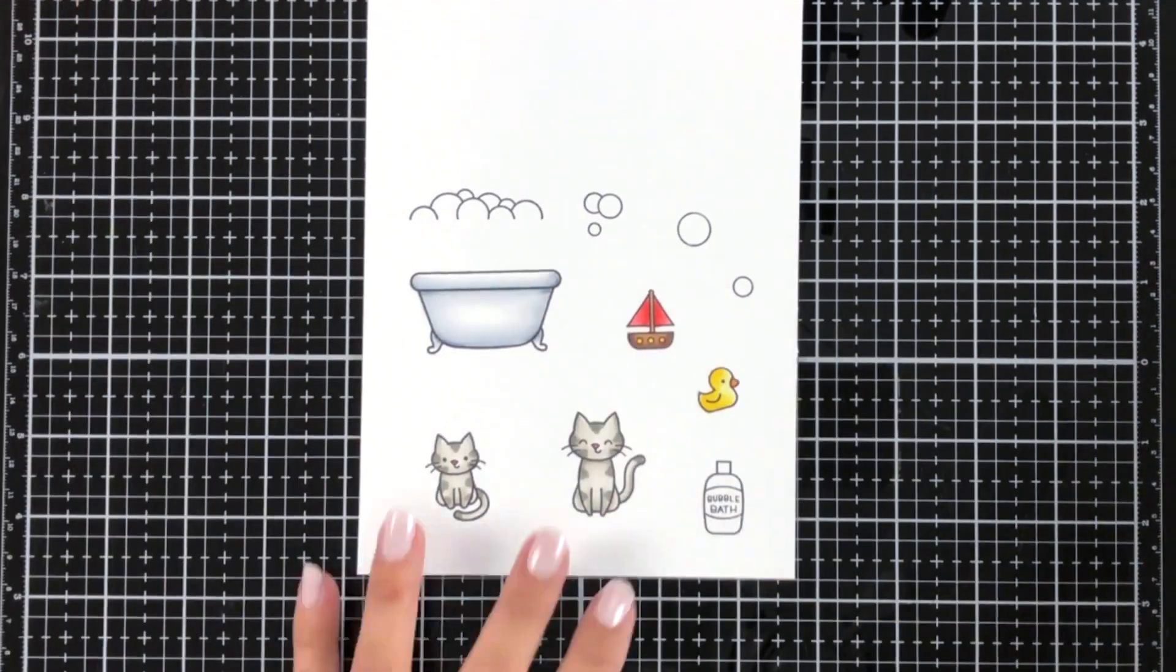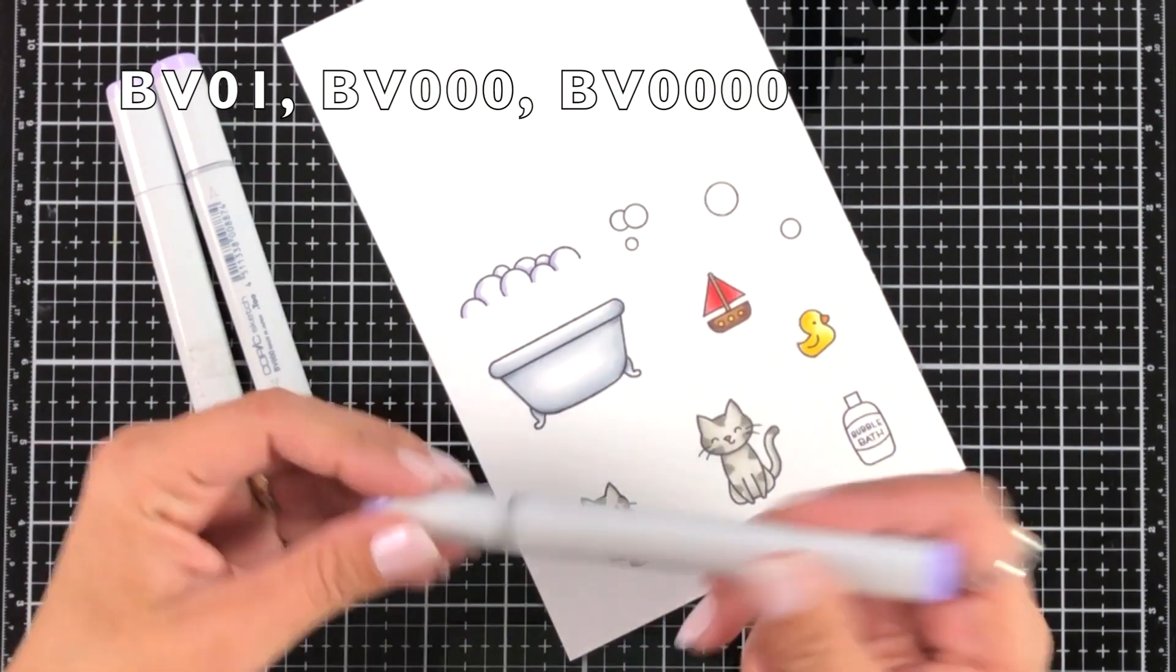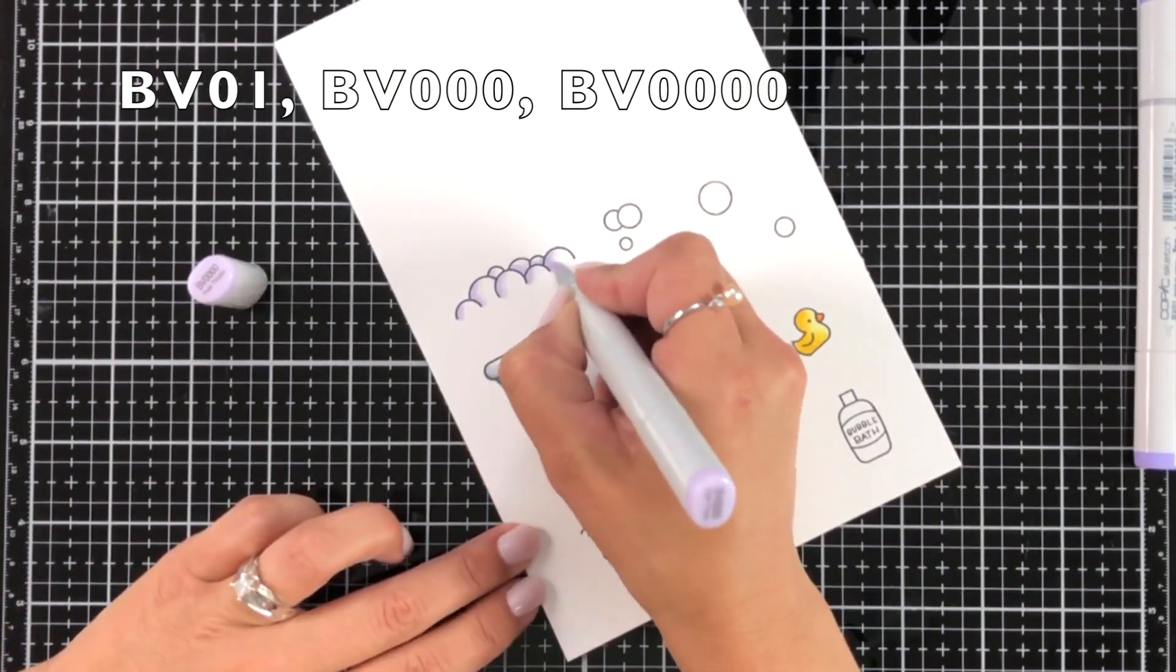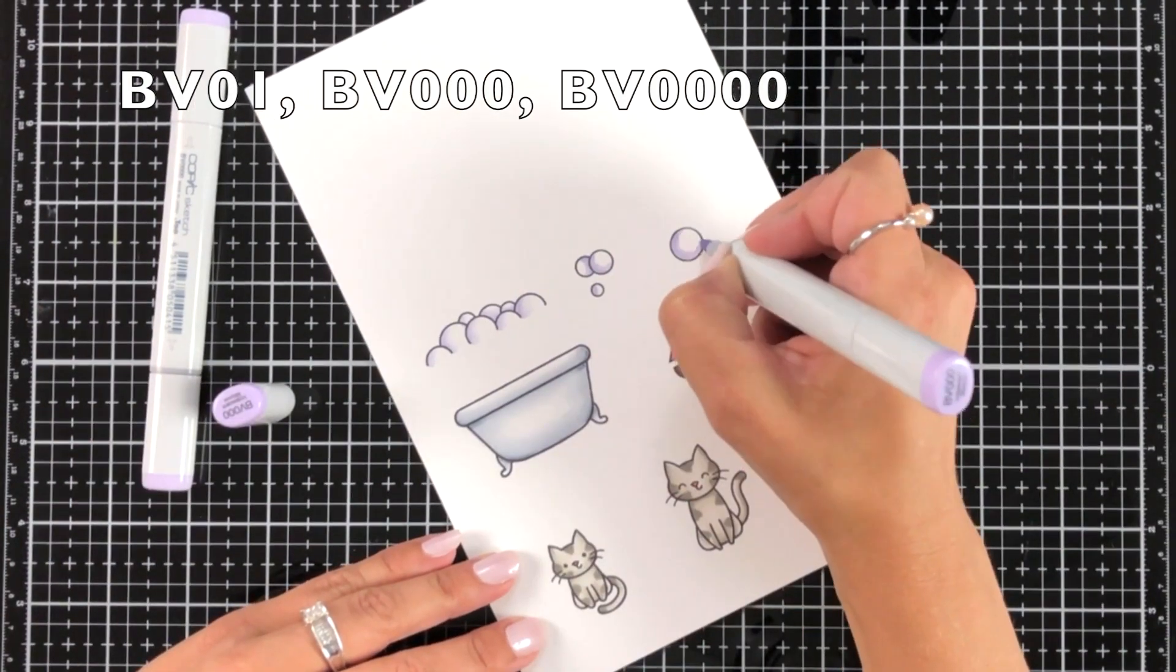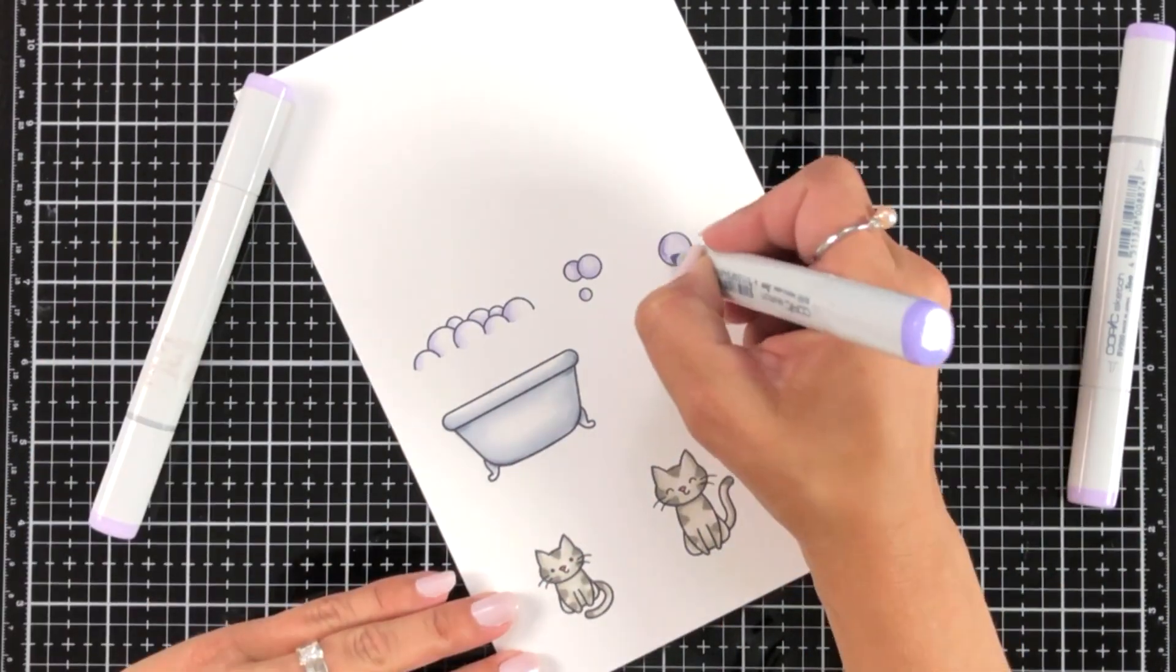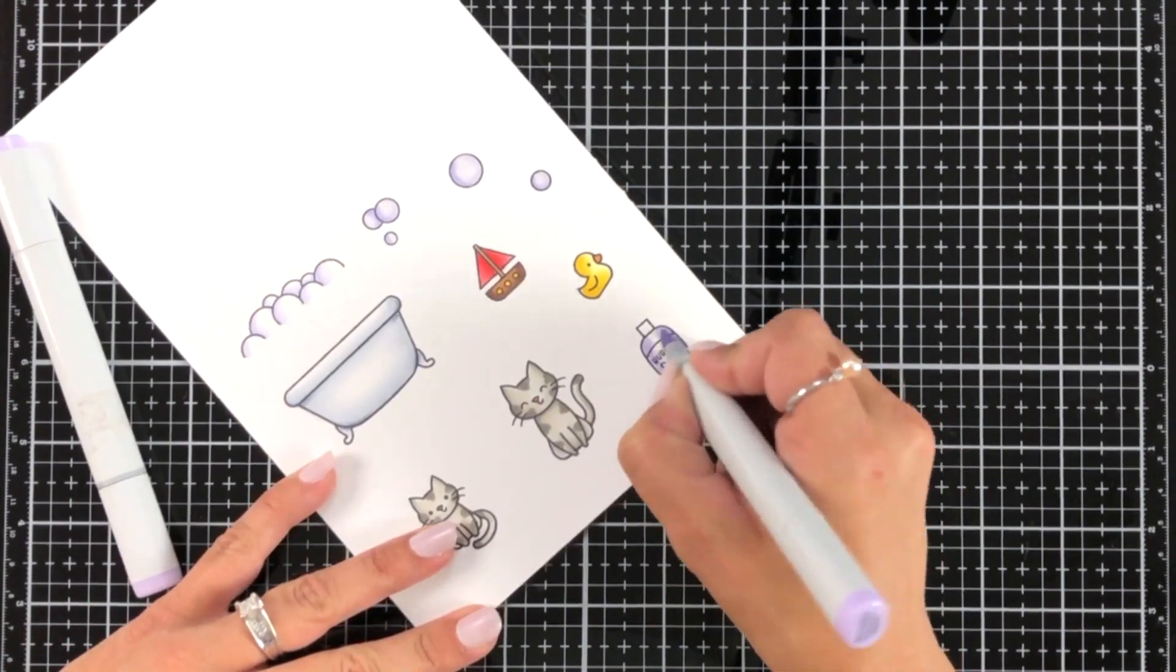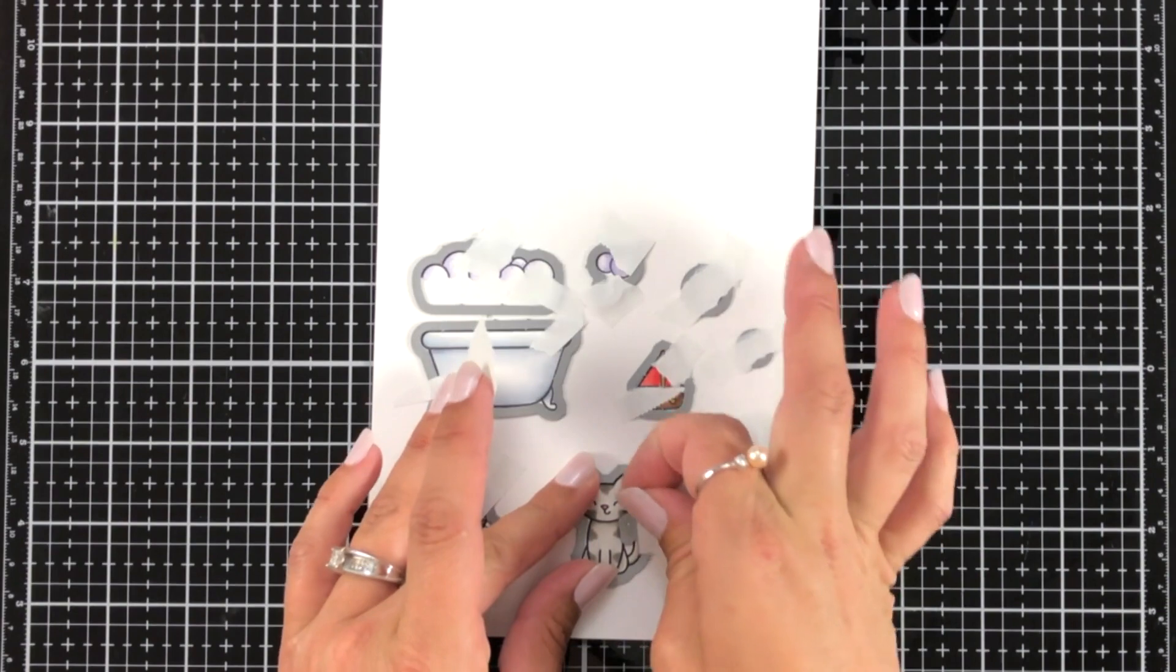Then I'm going to work on the bubbles and bubbles can be pretty tricky because they're kind of see-through or iridescent. I went with the BV Copic Marker set: BV01, 000, and 000. I apologize if it's a little hard to understand me. I've been dealing with a summer cold and my head is still pretty stuffed up.